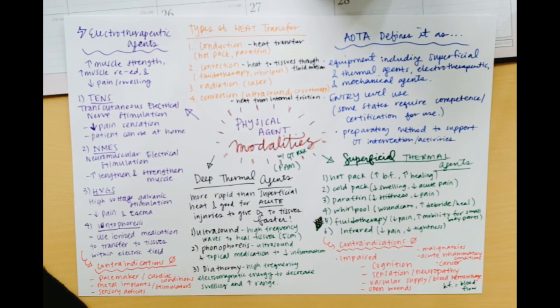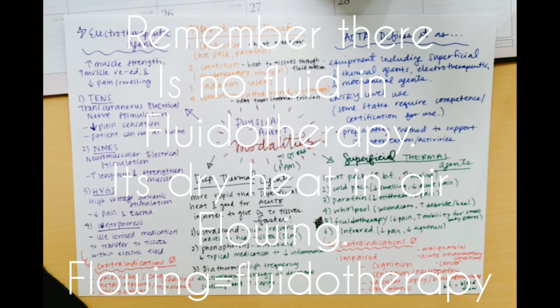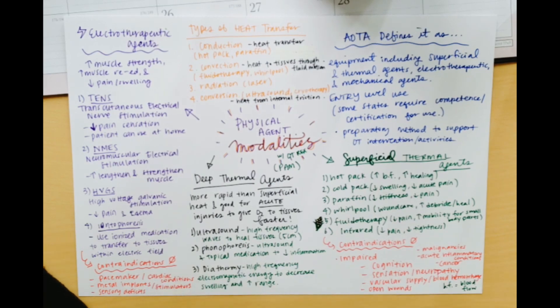Whirlpool is for wound care. So oftentimes, you'll hear that it's used for deep riding and cleaning to help like a wound heal. Fluidotherapy is to decrease pain and increase mobility for small body parts. It's specific to small body parts, because if you ever see what that machine looks like, it uses cornmeal or corn husk, and it spins rapidly inside and you can stick either an arm or a leg into the machine. And that's how it works. And I don't have too much experience with infrared, but that one decreases pain and tightness.